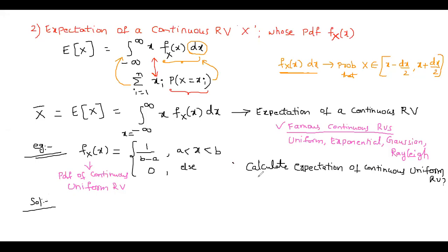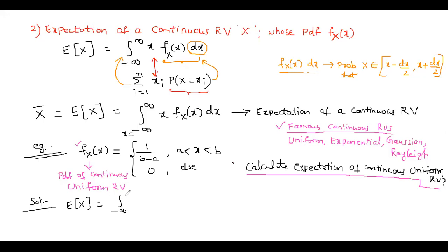In the exam you might be directly asked like this. By looking at 'continuous uniform random variable' you have to write the PDF and then calculate the expectation. Expectation of X, according to the formula, equals integral from minus infinity to plus infinity of small x into f_X(x) dx. Now if you look at the definition of the PDF of the continuous uniform random variable, it is...